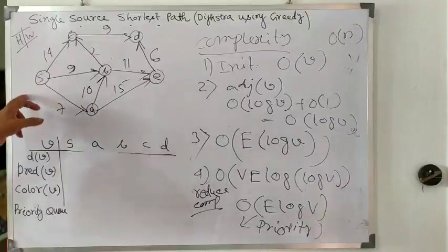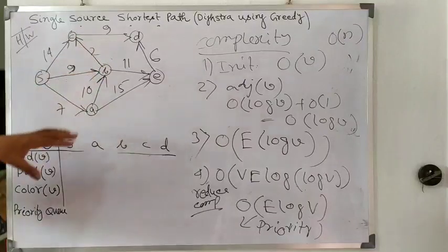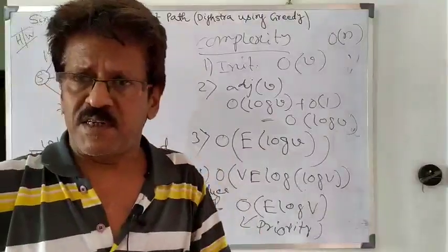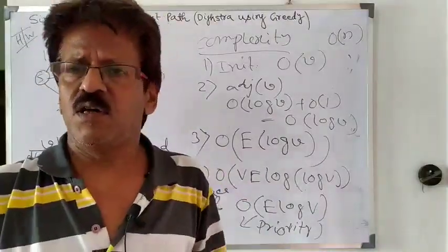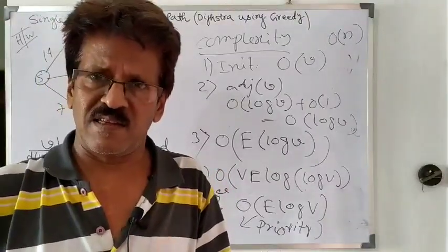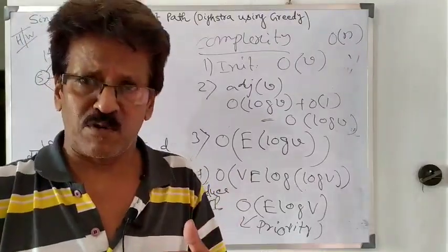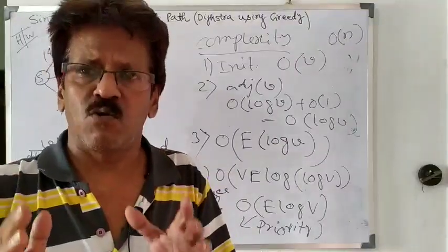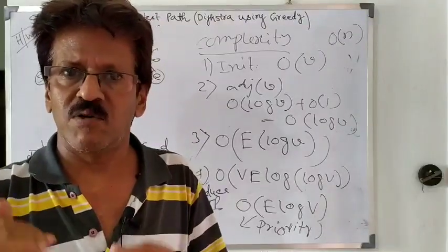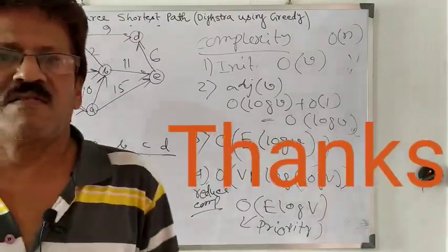Now, this is your homework: find the single source shortest path of Dijkstra applying the greedy method and write the answer in the comment box. If you want to get updated or the next video, please subscribe to my channel. If you need the PDF notes from these topics, you will find the Google Drive path in the description. Please open the description of the video and you will get the PDF path of the notes. That's all. Thank you.